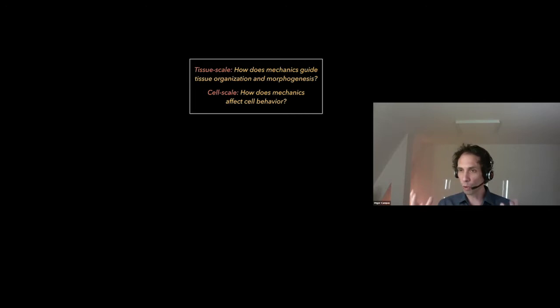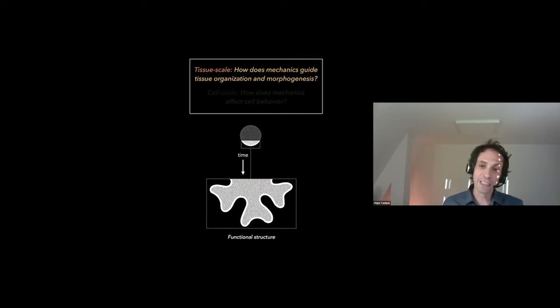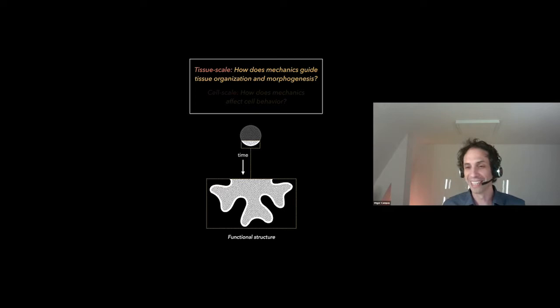With these techniques we can tackle two big questions. One: how does mechanics guide tissue organization and morphogenesis — how you shape a multicellular structure? Two: how does mechanics affect cell behavior — how cells sense and respond to mechanical cues in vivo? Let me focus first on the first question. Imagine you have a shapeless piece of tissue, and you want it to get into a functional structure. From a physical perspective, you need to control in space and time the mechanics of the tissue or its growth — create gradients in active stresses, material properties, or growth patterns.